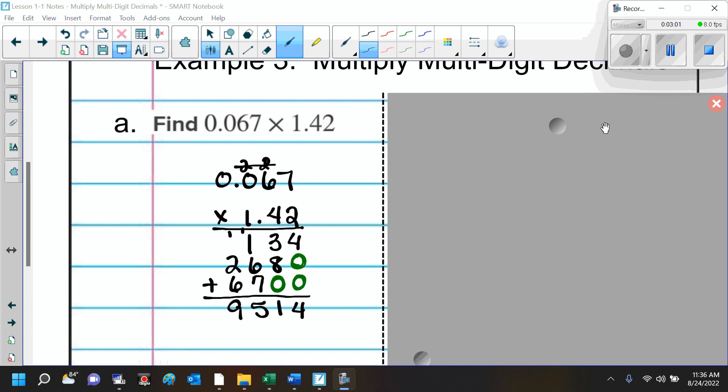Now, we have to decide where the decimal goes. How many numbers do I have behind the decimal in the first digit? 3. And how many in the second digit? 2. When we add those together, that means we need to have 5 numbers behind the decimal in the answer. Here's my decimal at the end. When I move it, we're going to move it 1, 2, 3, 4. Uh-oh, I only have 4. What do I need to do? Add a decimal. I need to put another one like that. And my decimal is going to go right there. What do I do right here? Add a 0.